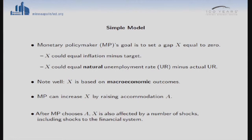That's the outline. Let me talk about a mean-variance framework. The monetary policymaker's goal is to set some kind of gap equal to zero. You can think about this gap as being inflation minus the target, or as the natural unemployment rate minus the actual unemployment rate. X is actually based on macroeconomic outcomes — it goes back to whatever the mandate is for the central bank in terms of the macro economy. This is an additional complicated step beyond what Steve was talking about.